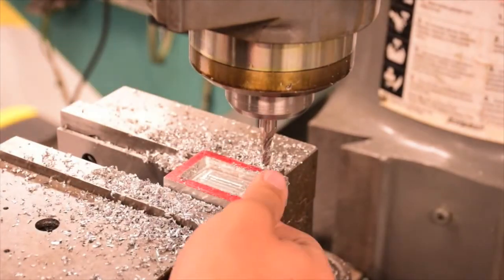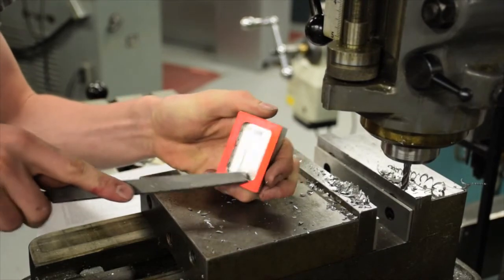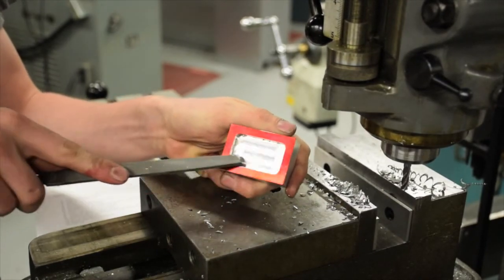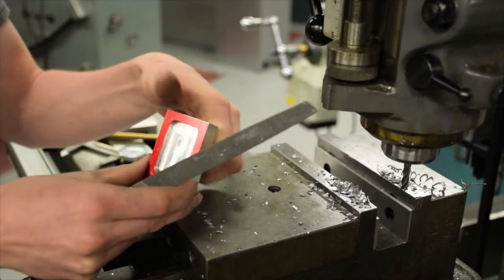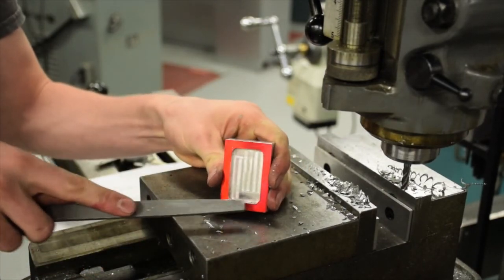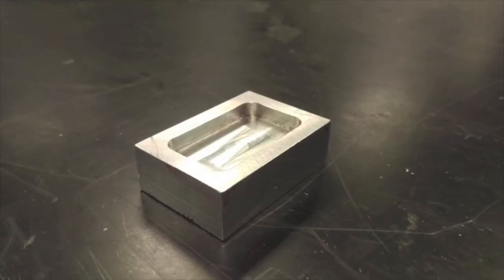When finished, lower the bed and remove your part. Make sure to remove any sharp edges with a metal file. That is how you mill an inside pocket.